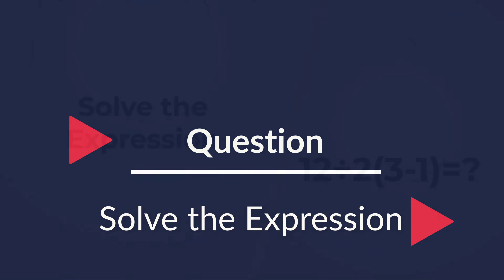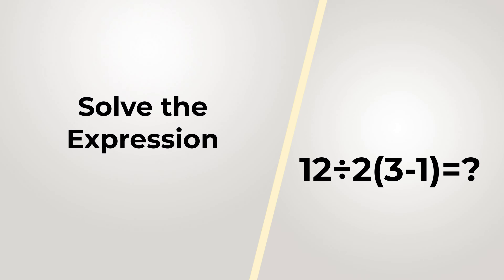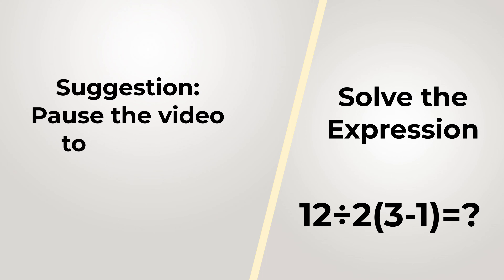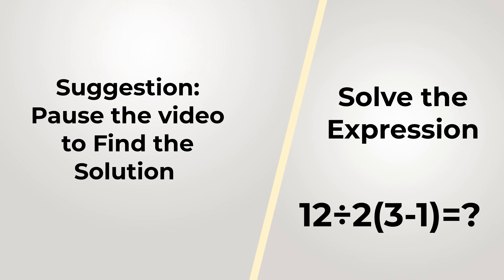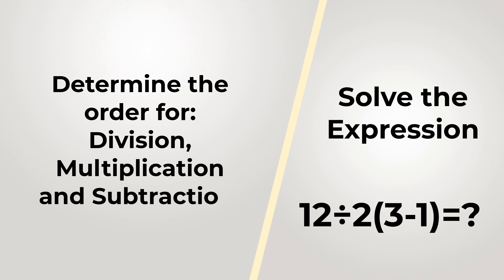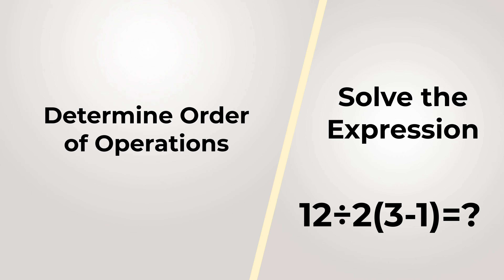Here's an interesting question which is easy to understand but you will have a lot of fun solving. You need to calculate the simple expression: 12 divided by 2, then multiplied by the value in parentheses, which is 3 minus 1. Take a look closely and see if you can come up with the answer. There are three operations here: division, multiplication, and subtraction.